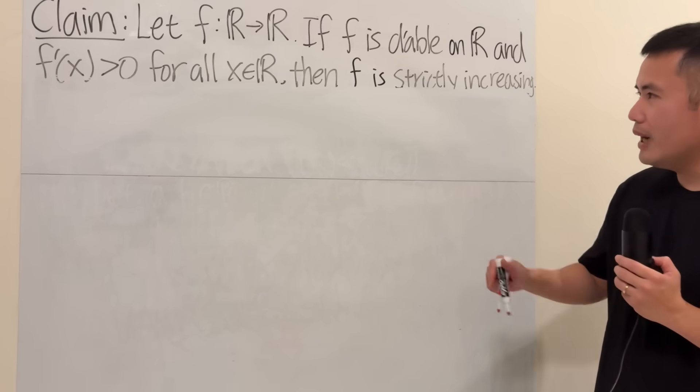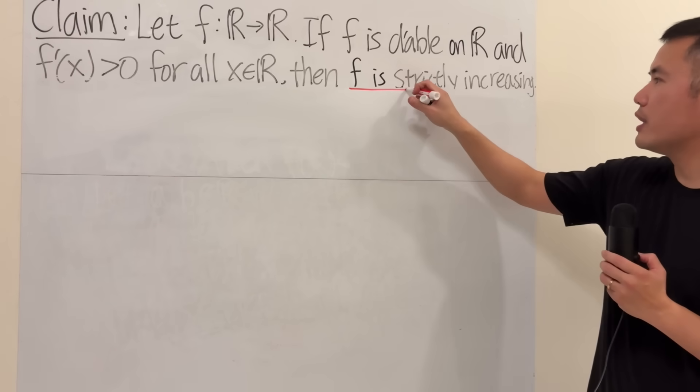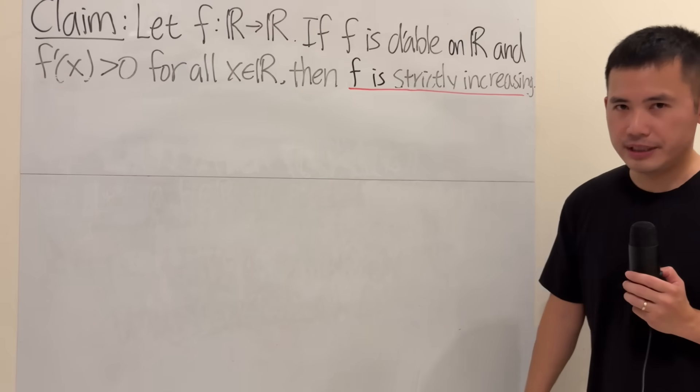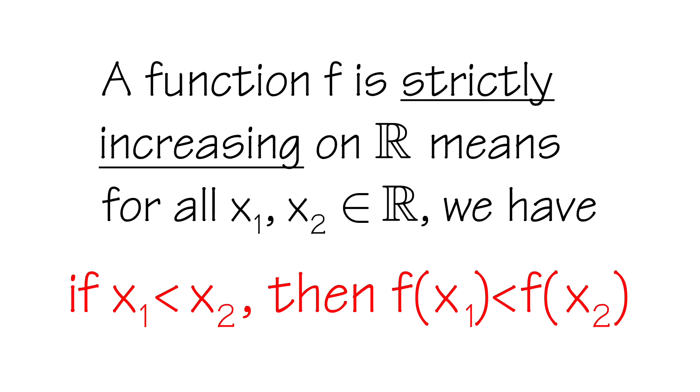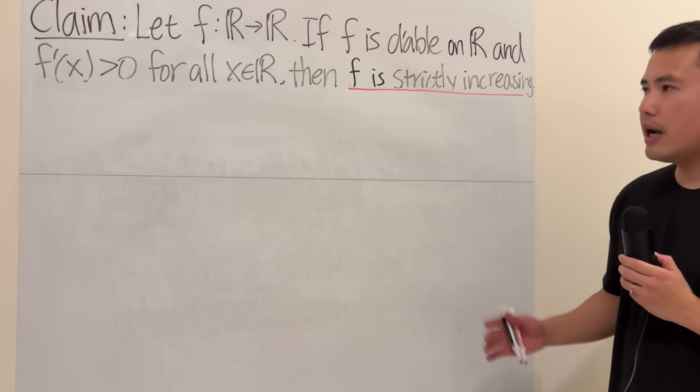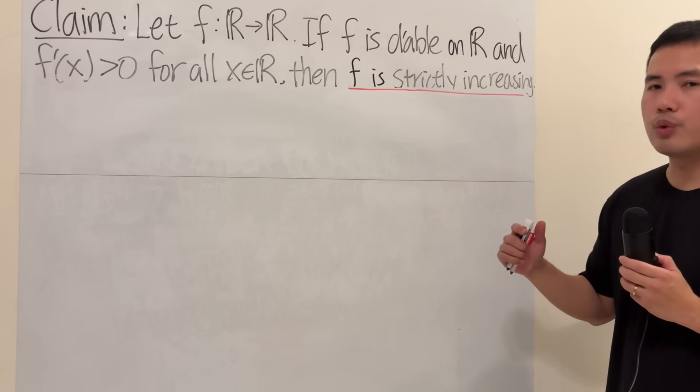First thing first, we will have to know what makes a function strictly increasing. Recall that a function is strictly increasing, let's say on R, it means the following: for any two elements of R, let's say x1 and x2, if x1 is less than x2, then f of x1 is less than f of x2. In another word, the bigger the input, the bigger the output.